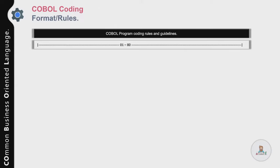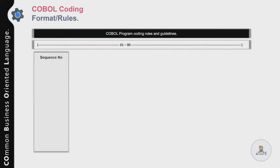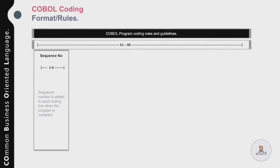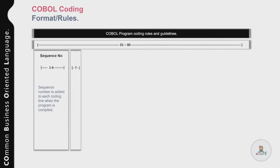Each line in a COBOL program is considered to be 80 columns, divided into five fields each with its own significance. The first six bytes or columns are reserved for sequence numbers, which are added by the compiler during compilation and are no longer used in modern days — you can leave them blank. Column number seven is generally used for comments, continuation, or form feeds.